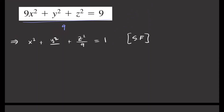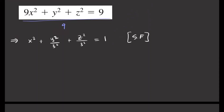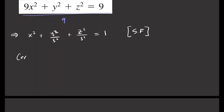I'm going to rewrite the 9s as 3 squared so you know how far to travel from the center along the y-axis and z-axis. The center for this ellipsoid is (0, 0, 0) since there are no x-naught, y-naught, or z-naught terms. Let's set up the x, y, z axes for our sketch.